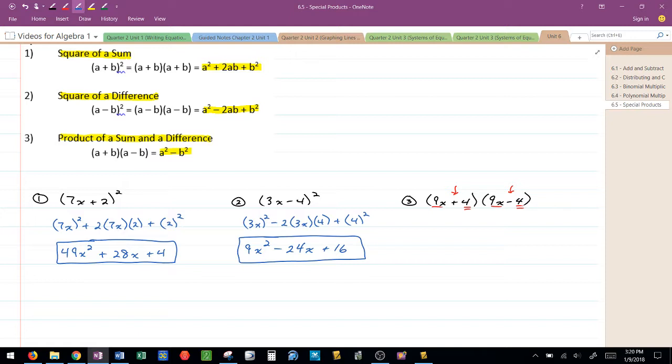When this occurs, all that I have to do is take the first term, square it, minus the second term or the last term and square it. This gives me 81x² minus 16, and that's a special product.